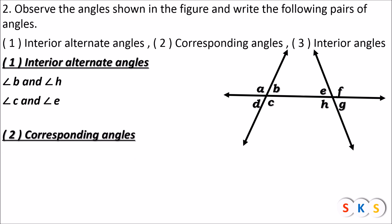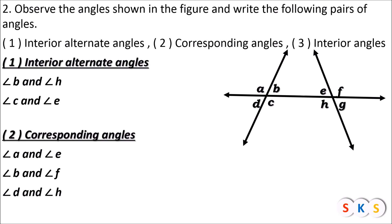Now we have to write the corresponding angles. Corresponding angles are the angles which lie on the same side of a transversal. Angle A and angle E is one pair of corresponding angles. Angle B and angle F is the next pair. Angle D and angle H is the next pair. Angle C and angle G is the last pair of corresponding angles.